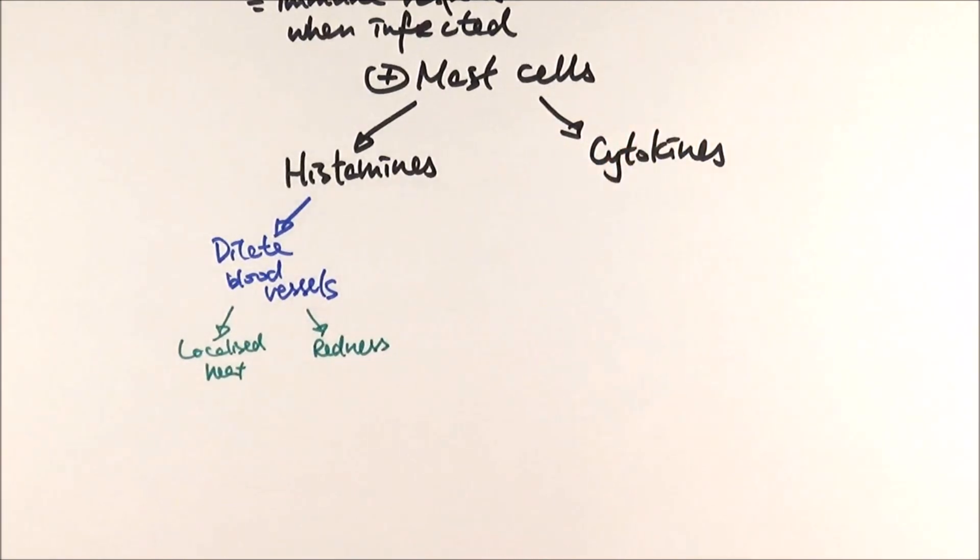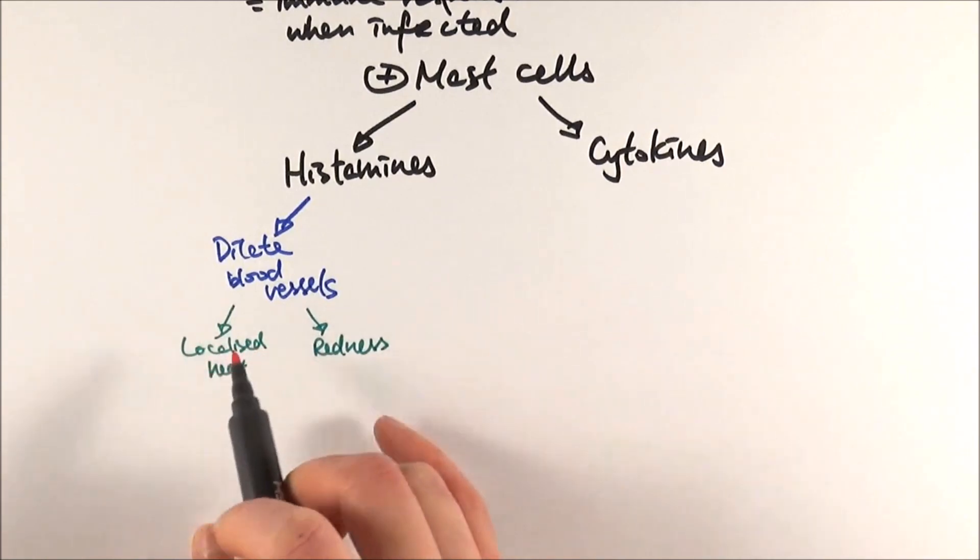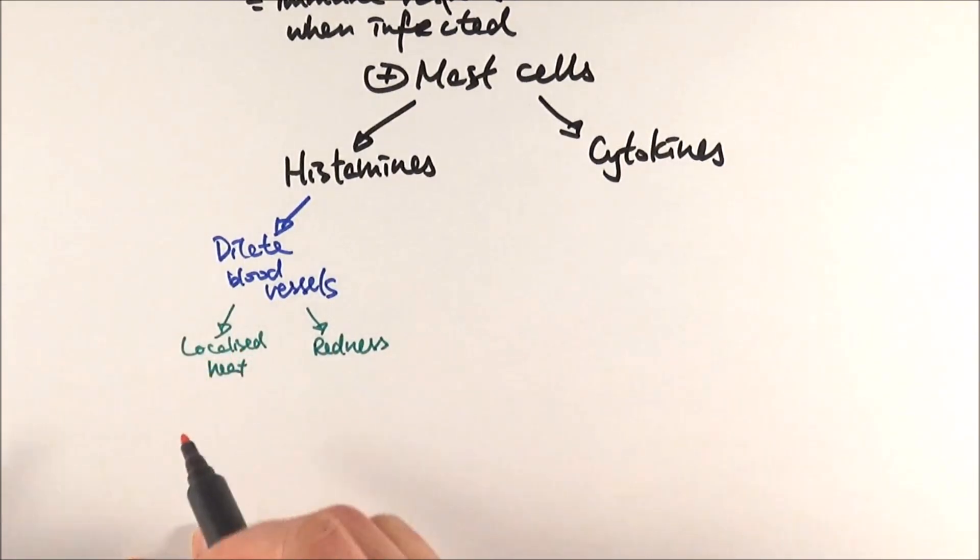Fever is actually brought about by cytokines. You're trying to make the immune system work better at higher temperatures, and higher temperatures naturally inhibit pathogen reproduction everywhere. But in inflammation, it's just a very specific area.